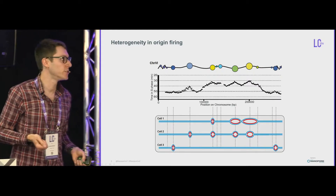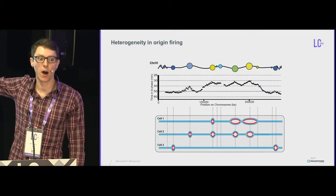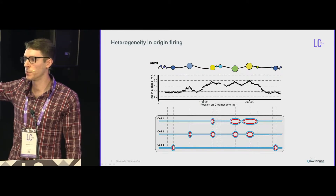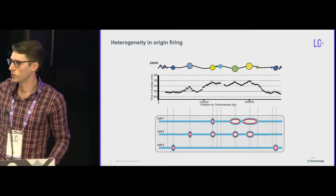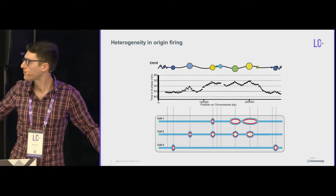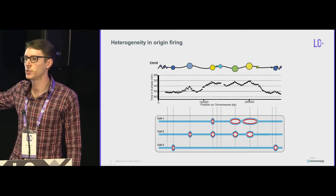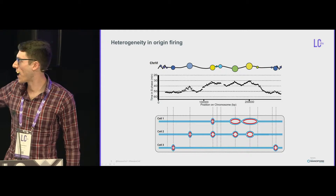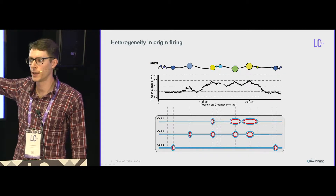Using next-generation sequencing methods, we can plot when positions along the chromosome replicate on average. The x-axis here is chromosomal coordinate, and the y-axis is the position in S phase when, on average, that position will have replicated. Note that in this field, we tend to invert the y-axis, so origins are peaks and then the curve moves away. But under this ensemble average is a whole population of cells, each of which is doing this just a little bit differently. And most importantly, if some error happens, we're not going to be able to observe it by looking at the ensemble method.